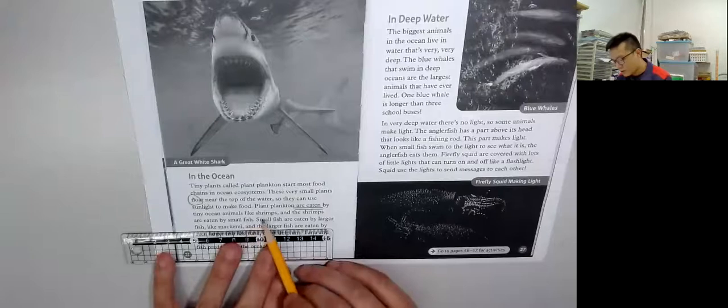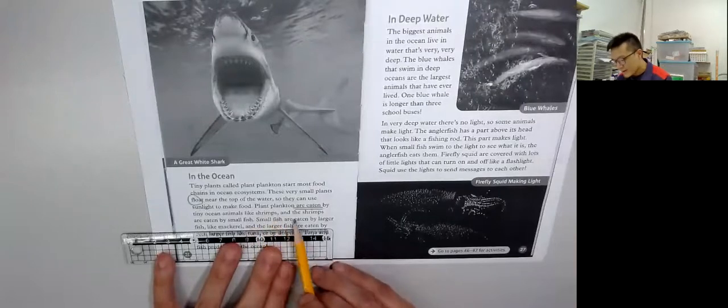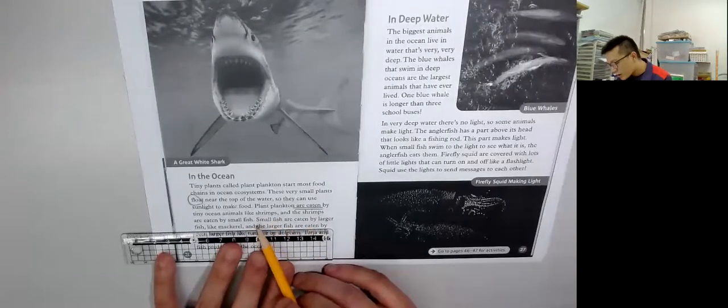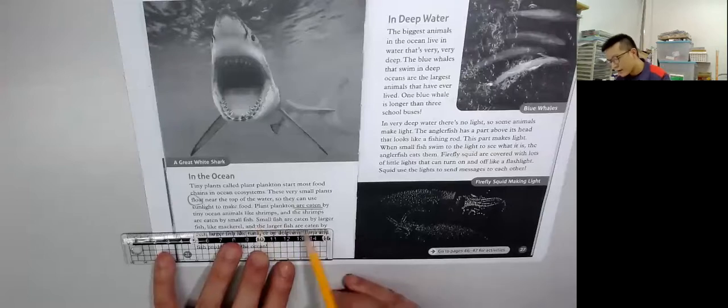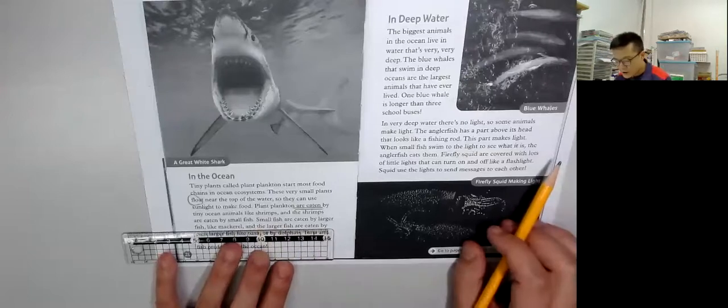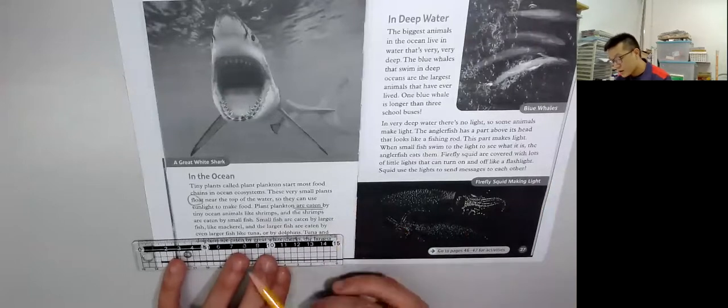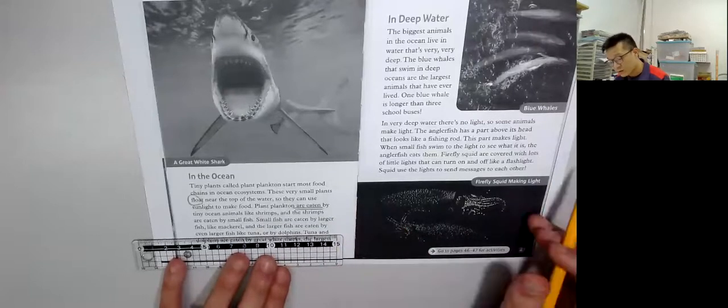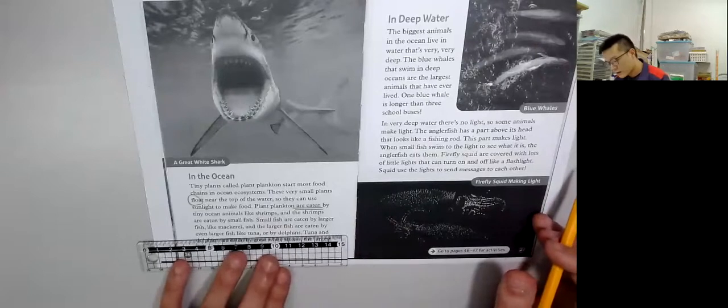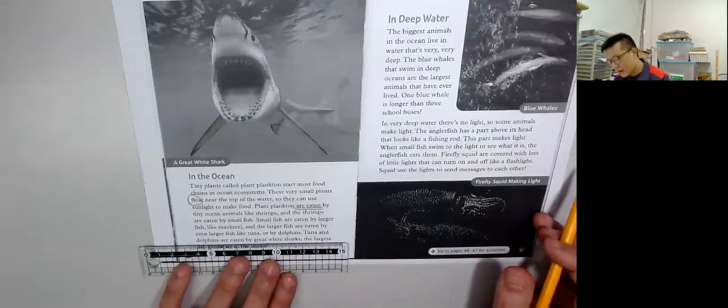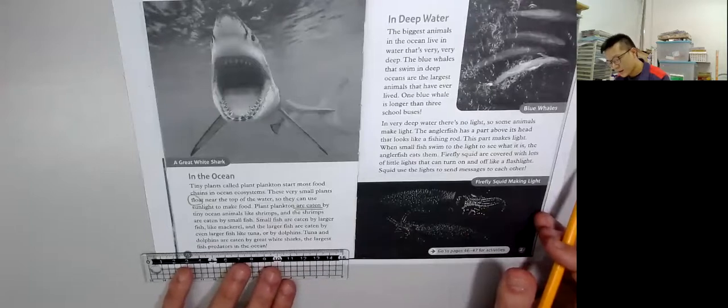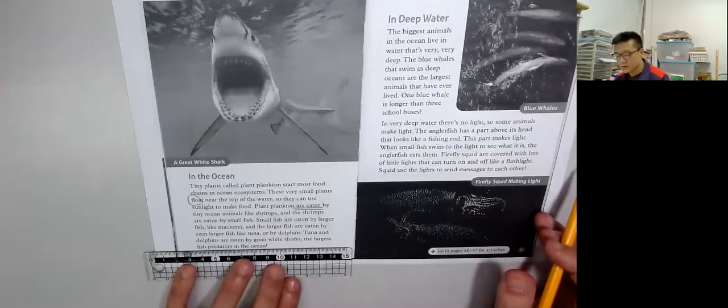Plankton are eaten by tiny ocean animals like shrimps. The shrimps are eaten by small fish. Small fish are eaten by larger fish. And the larger fish are eaten by even larger fish like tuna or by dolphins. Tuna and dolphins are eaten by great white sharks, the largest fish predators in the ocean.